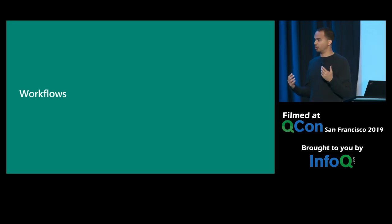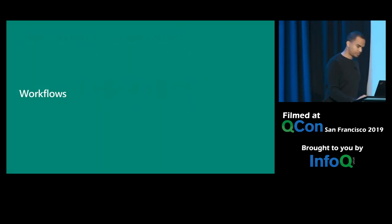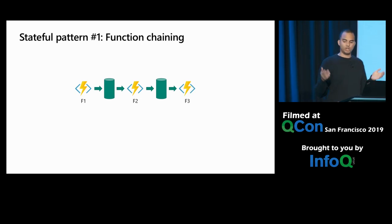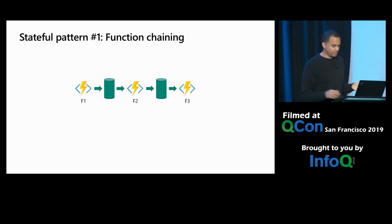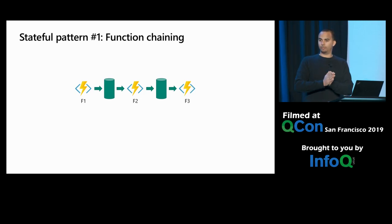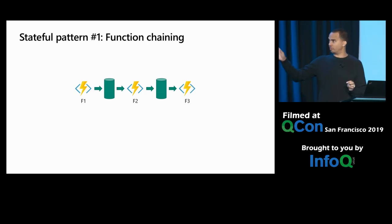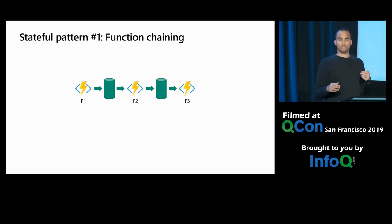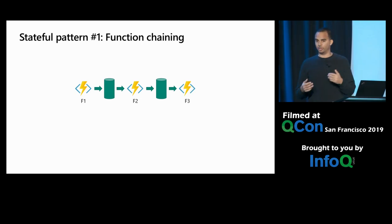The first stateful programming model I want to talk about is workflows. Here's a common workflow pattern: f1, f2, and f3 are functions — you could think of those as microservices. f1 produces some output, stored into a queue, which becomes the input of f2. f2 does some computation, creates an output fed to f3. Just a chain of functions — very common in order processing, where you receive an order, check inventory, remove from inventory, get the thing shipped.